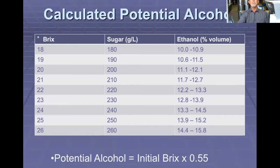Here are some examples of calculations that can be estimated. The simple calculation is: potential alcohol equals initial BRIX times 0.55. In a juice with a BRIX of 18, we would have approximately 180 grams per liter, which converts to about 10% ethanol. In a juice with 26 BRIX, we would have 260 grams per liter, ending up with a final alcohol concentration of about 14.4%.